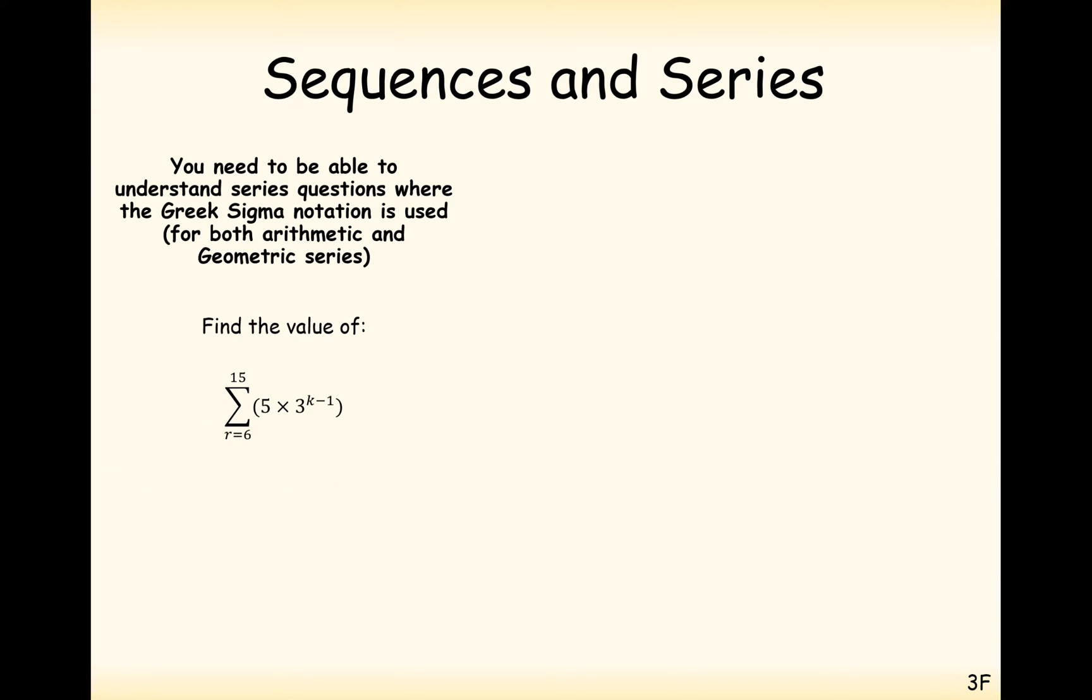Another slightly difficult question here would be to add up starting at 6 this time. So substituting in 6, 7, 8, 9, up to 15 into this formula here. So effectively what we've got here is the sum of the sixth term up to the 15th term being substituted into this formula here.